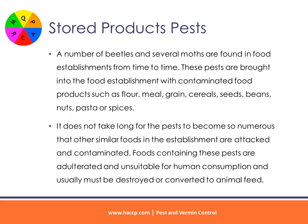Stored Products Pests. A number of beetles and several moths are found in food establishments from time to time. These pests are brought in with contaminated food products such as flour, meal, grain, cereals, seeds, beans, nuts, pasta or spices. It does not take long for the pests to become so numerous that other similar foods in the establishment are attacked and contaminated. Foods containing these pests are adulterated and unsuitable for human consumption, and usually must be destroyed or converted to animal feed.